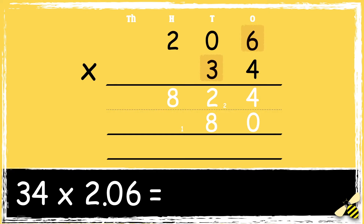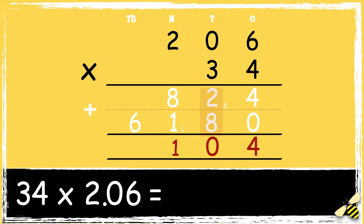Next is 3 tens multiplied by 0 tens: 3 times 0 is 0. We need to add the 100 below, so 0 add 1 is 1. Next we multiply 3 tens by 2 hundreds: 3 times 2 is 6. The next step is to add the 2 answers together: 4 add 0 is 4, 2 add 8 is 10, carry the 1 down in the hundreds column. 8 add 1 add 1 is 10, carry the 1 down in the thousands column, and finally 6 add 1 is 7.